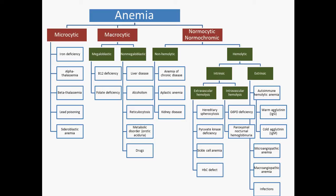The three major types of anemia include microcytic, macrocytic, and normocytic anemia. Those different types are referring to the average size of the cell, measured by the mean corpuscular volume — the MCV. The normal red blood cell MCV is between 80 and 100, so anything smaller than that would be microcytic, and anything bigger would be macrocytic.